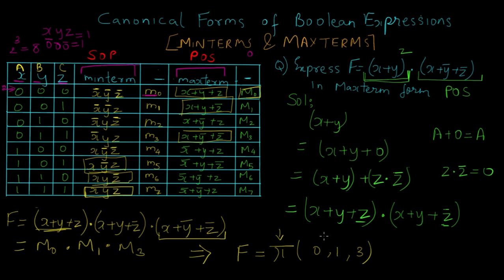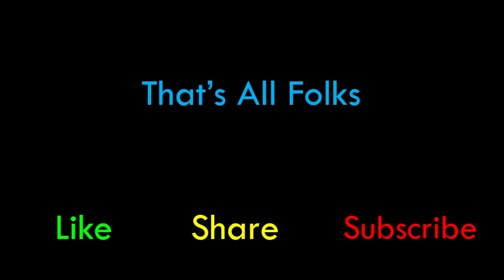So this is how you convert a typical boolean expression to canonical forms, that is min terms or max terms. That's it for this video, guys. I hope you understood the concept of canonical forms and min terms and max terms, since we'll be needing them in further tutorials as well. If you liked this video, give it a thumbs up, and if you have any doubts or queries you can put them in the comment section below. Do share this video with your friends and don't forget to subscribe to our channel. Peace!